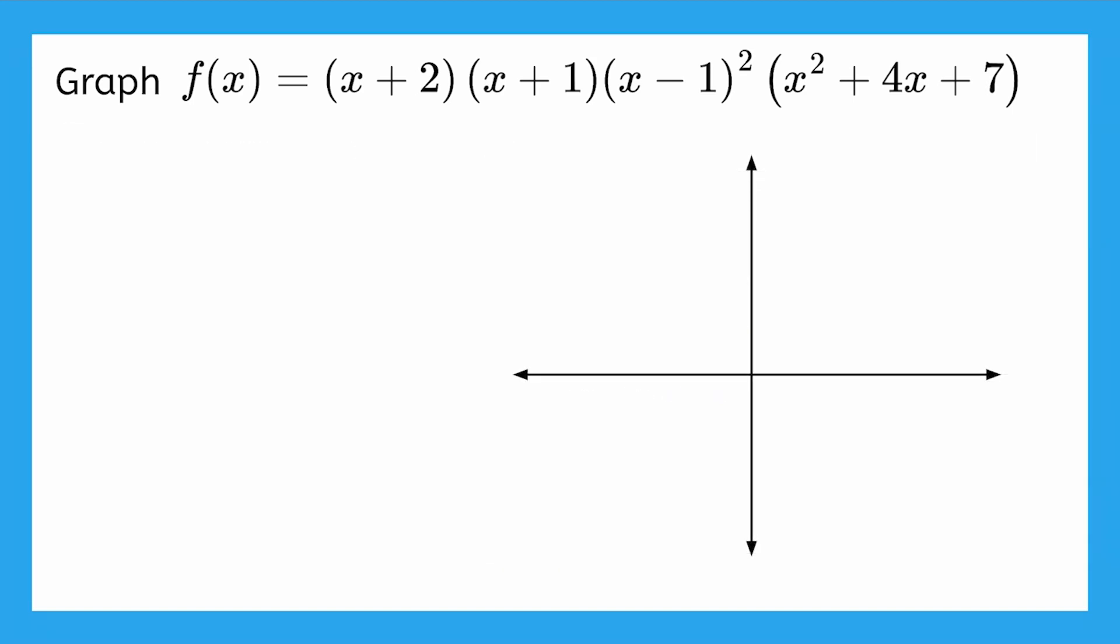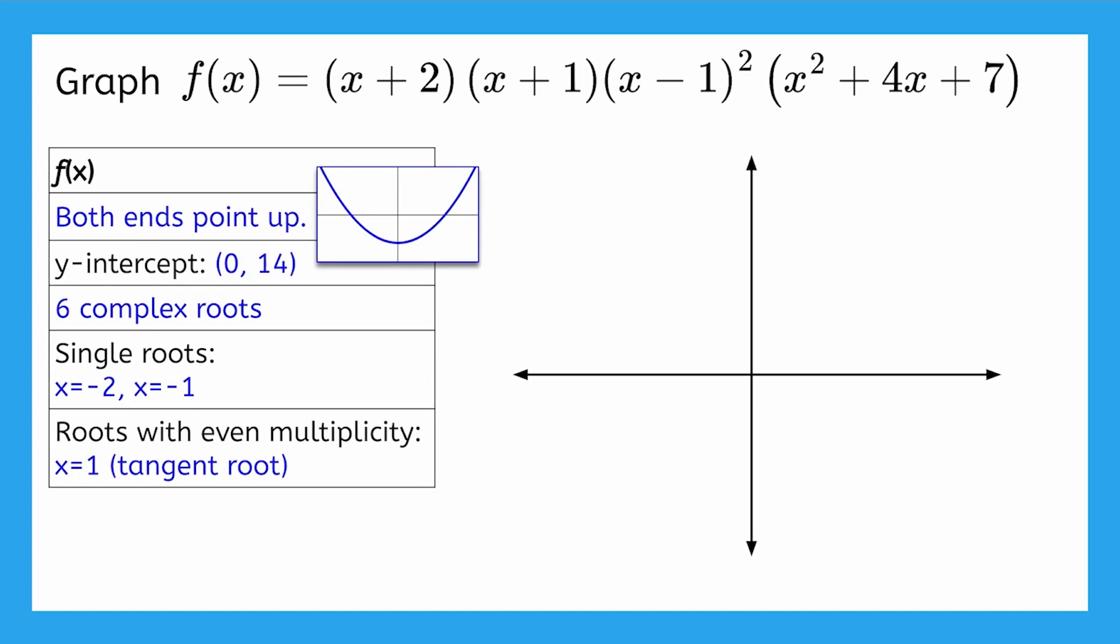Here are the key sections from the table that we'll need. I like to start by lightly sketching arrows showing the end behavior we already determined, which helps me begin generating a mental picture of what this function will look like. We know that both ends will point up, so I put in some light arrows that show the direction of each end of the function. Next, plot the y-intercept.